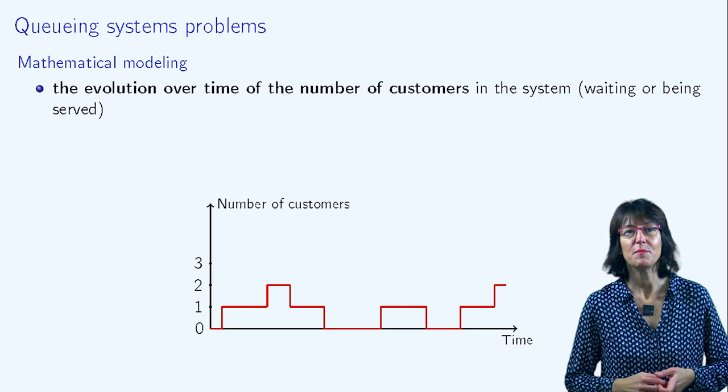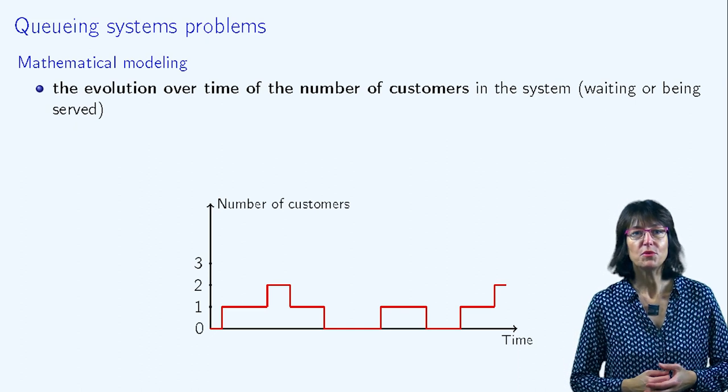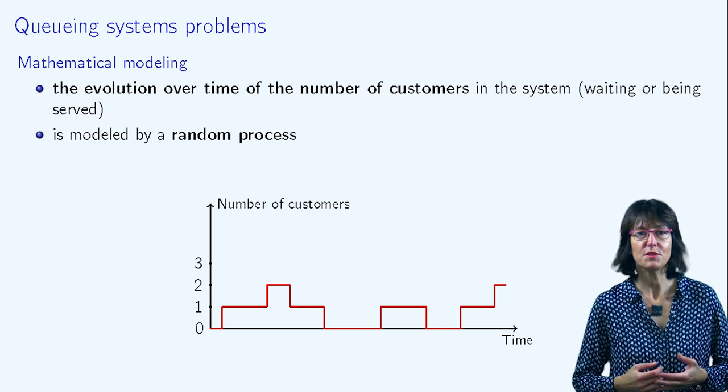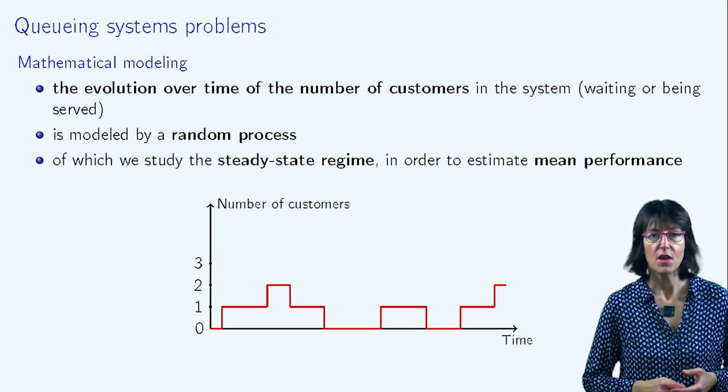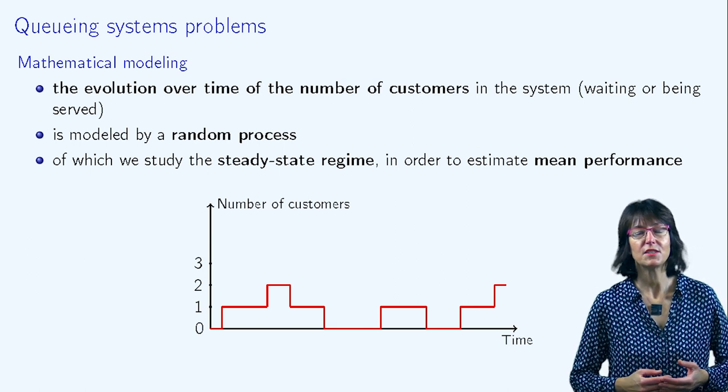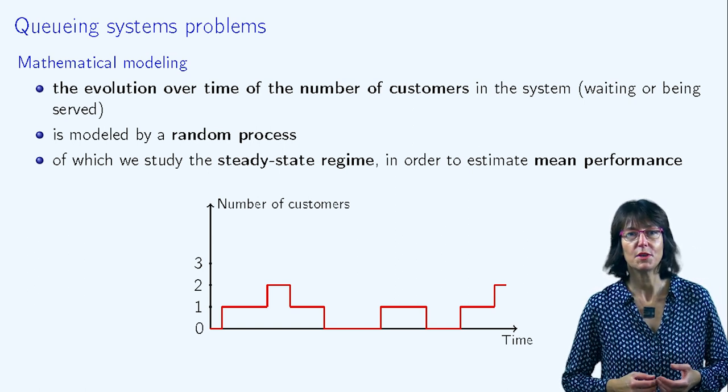Queueing theory is mainly mathematics. The standard approach is to model the evolution over time of the number of customers in the system as a random process. The mean performance of the system is then obtained from an analysis of the steady-state regime of this random process.